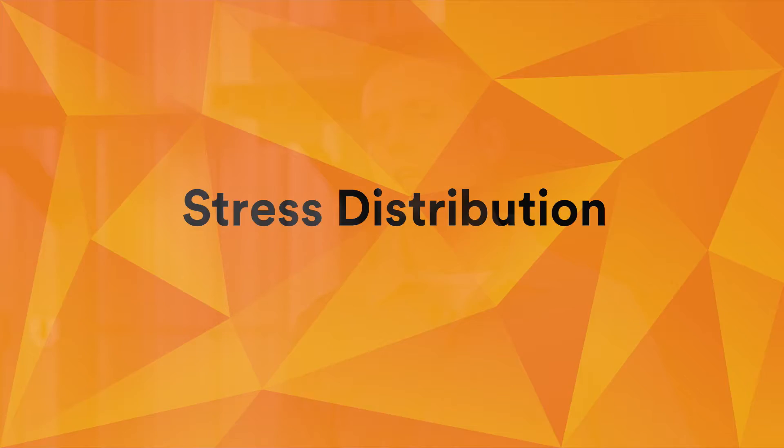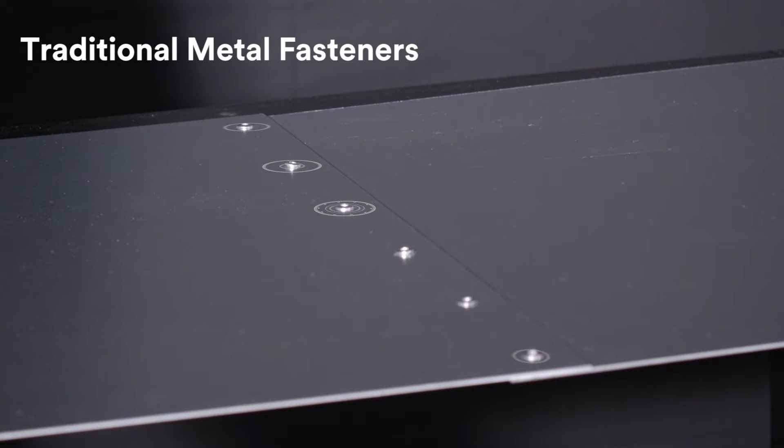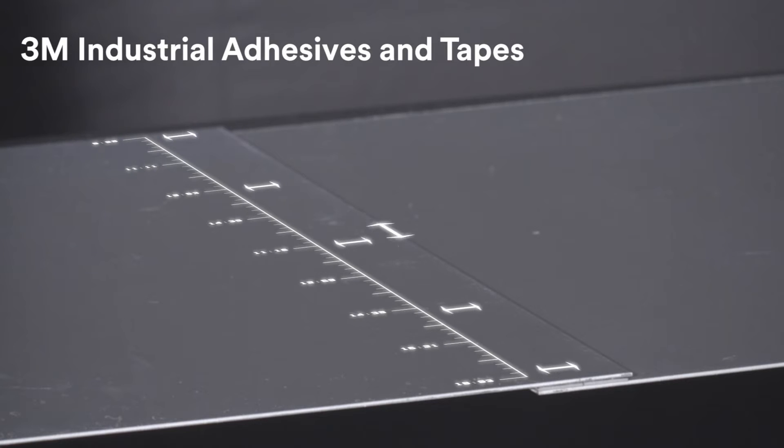Now we're looking at two properties in this test. The first is stress distribution. A rivet or screw hole in the substrate concentrates stress at the hole and can tear out from the substrate when stressed. The 3M industrial adhesives and tapes distribute stress evenly over the entire bonded area.